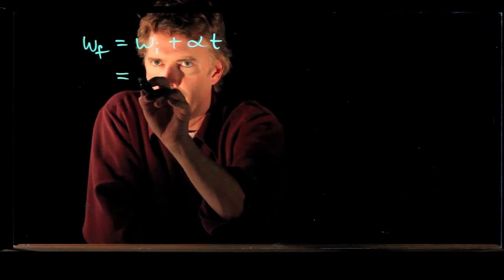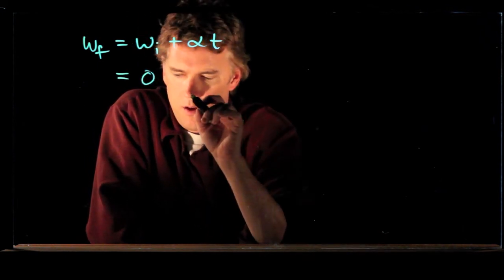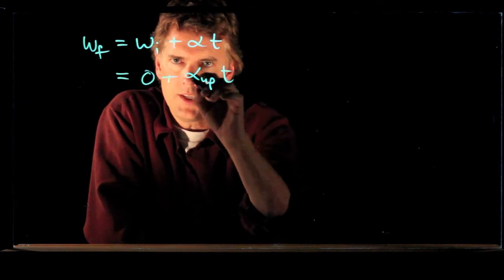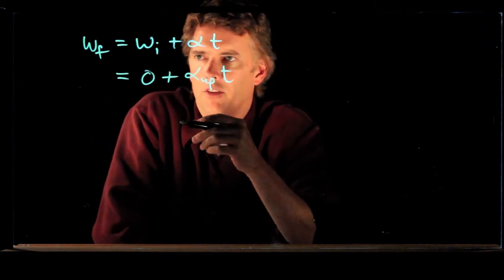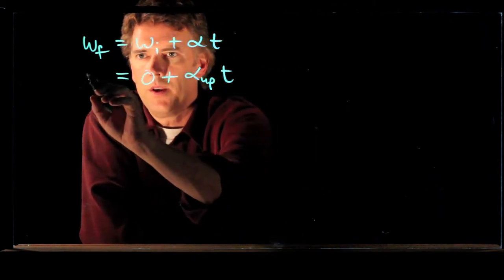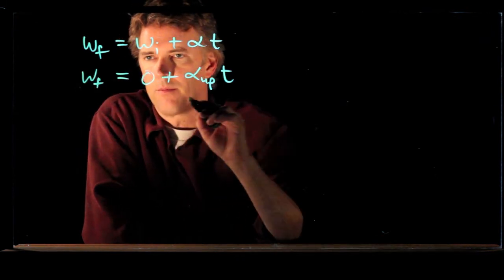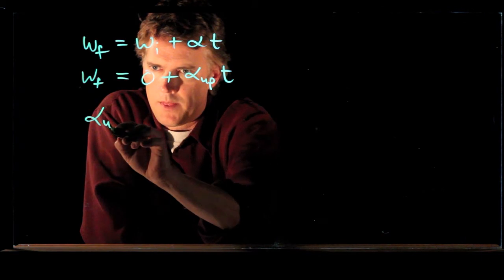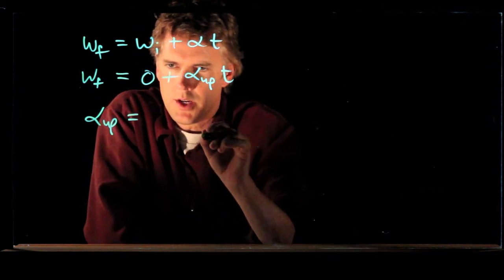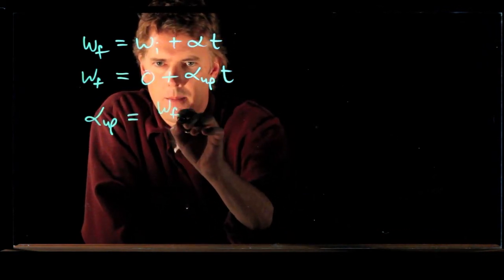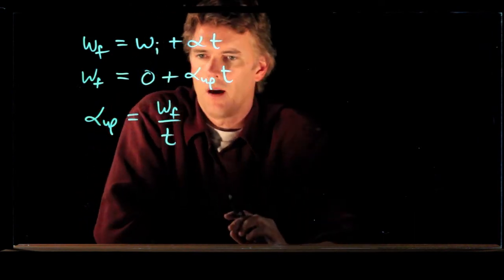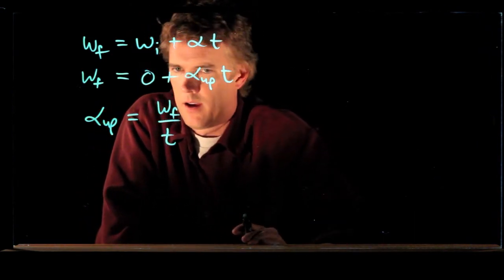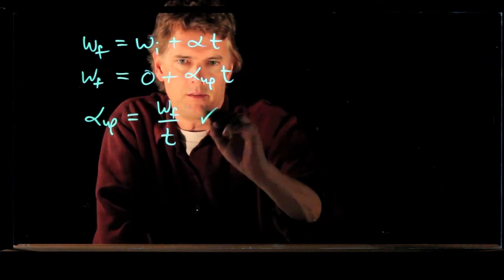What do we know here? Well, we know this. We know that alpha is going up. I just gave you t. I said it's 9 seconds for the spin up, and we know omega final. We were given that. So look, we can calculate what that angular acceleration is on the way up as it's spinning up. It's just omega final over t, and we know all those things, so that's good.